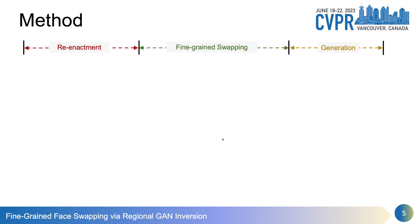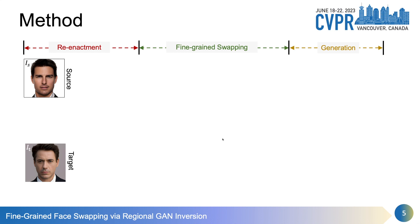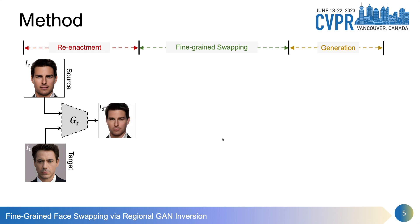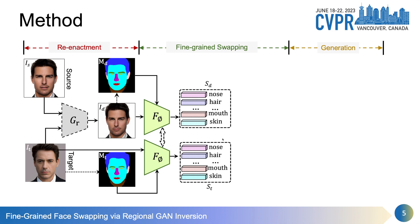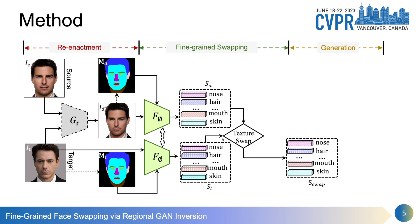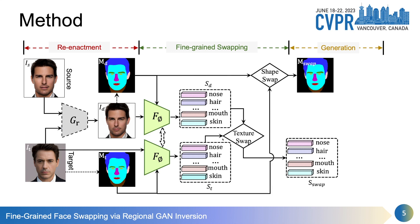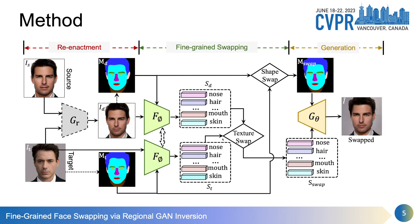Here is the overview of our framework. Given a source and target image pair, we first use a reenactment model to produce a driven image that shows similar pose and expression as the target. The masks of the target and driven images are estimated. Then, the driven and target images along with their masks are fed into an encoder to extract texture codes for each facial region. After that, texture swapping and shape swapping procedures are designed to swap the face in a fine-grained manner, and the swapped texture codes and shapes are sent to a generator to produce the final result.